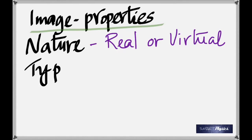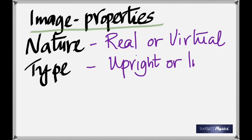The second property is the type of image — some images are upright, others are inverted. If you're trying to shave your face, an inverted image is of no use. Or if you use a mirror that produces an inverted image as a rear-view mirror in your automobile — if you see the inverted image of a huge truck behind you, you're going to be scared to death. So type of image could be upright or inverted.